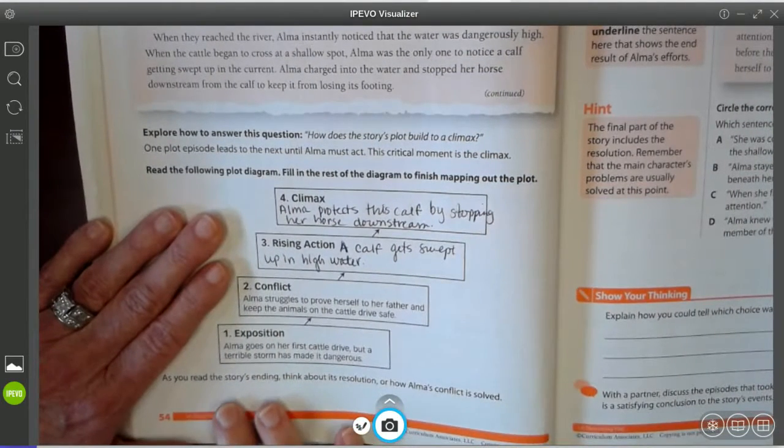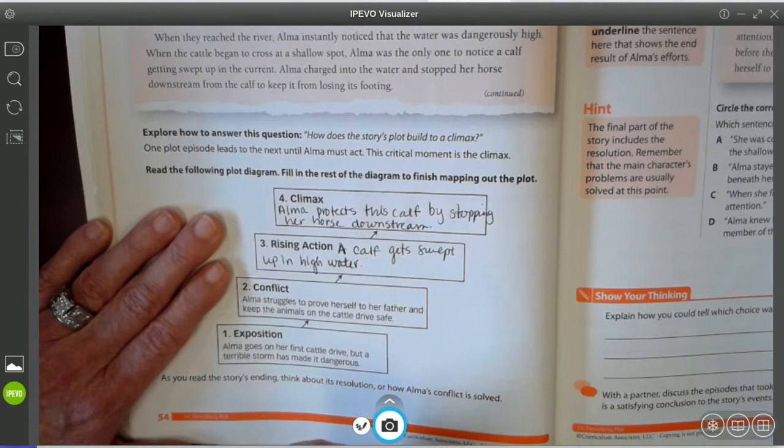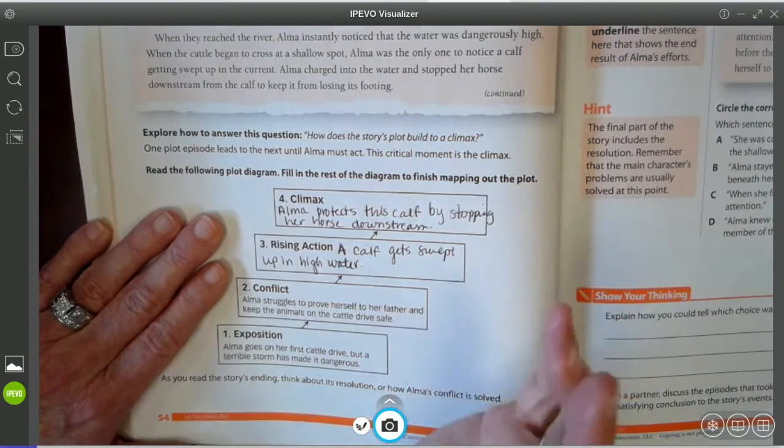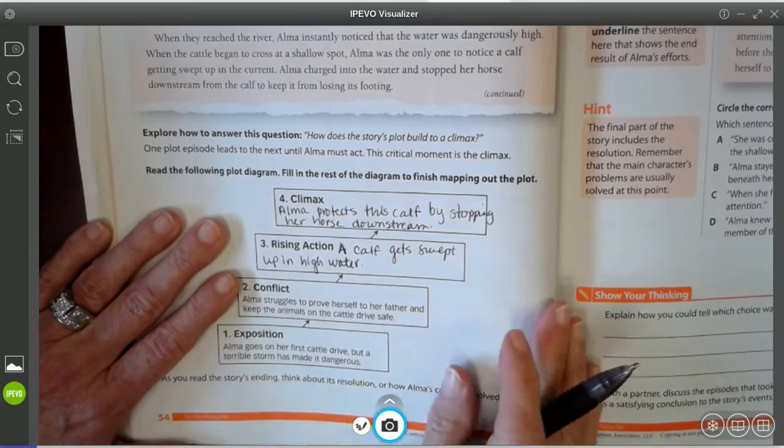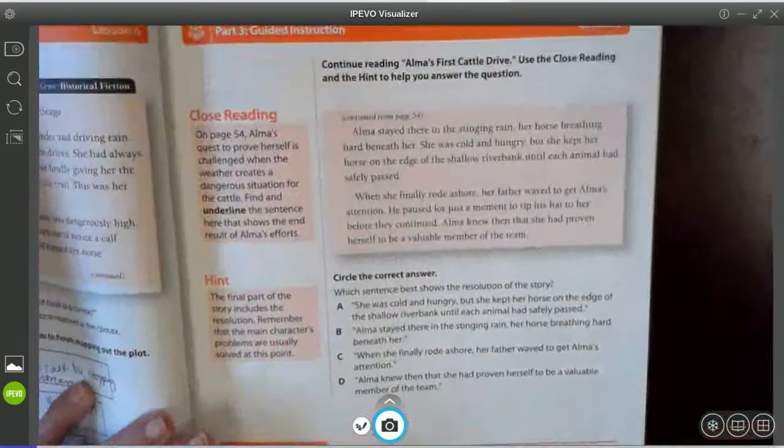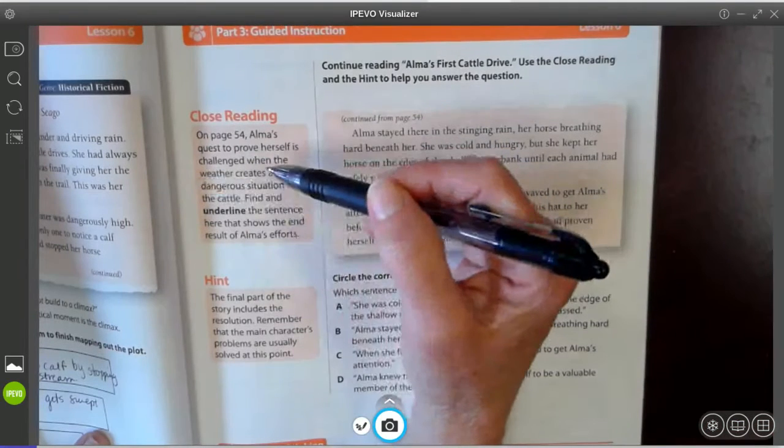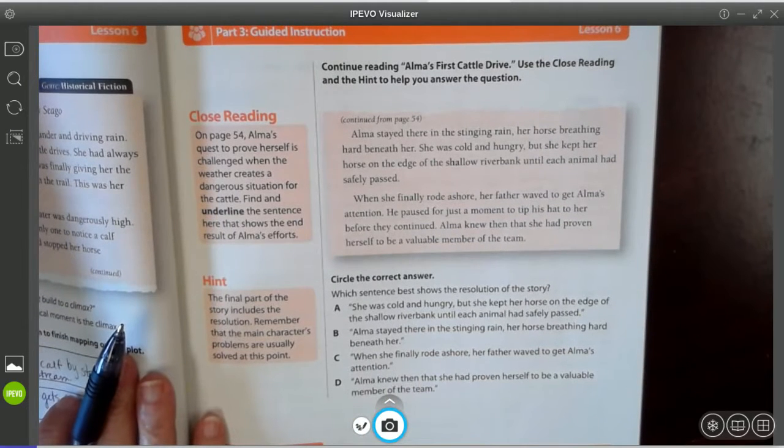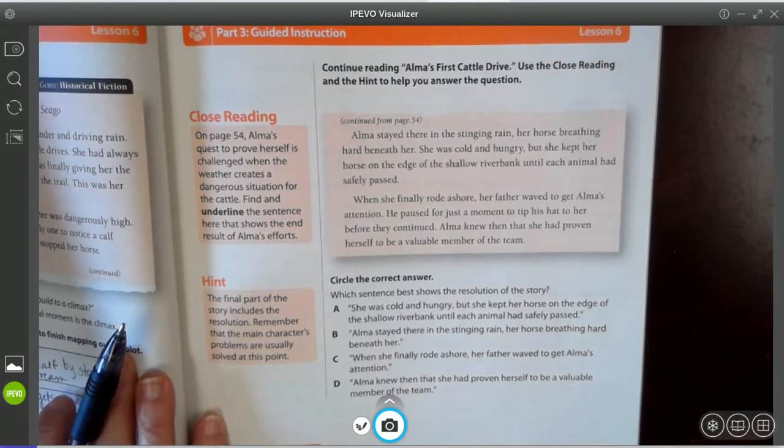So as we read the story's ending, we're going to think about its resolution or how Alma's conflict is solved. Her conflict, now you can't get confused in what's going on in the story. The calf also is in a bad situation. But the conflict itself is that Alma is trying to prove herself to her dad. So how does she do that? How does she solve that? We can use this little close reading section here to help us think through what we're about to read.